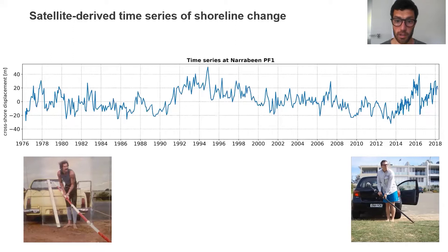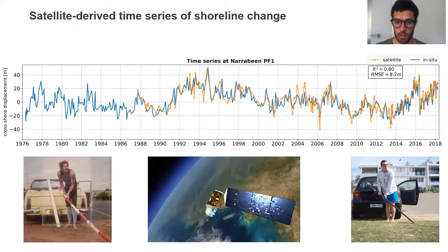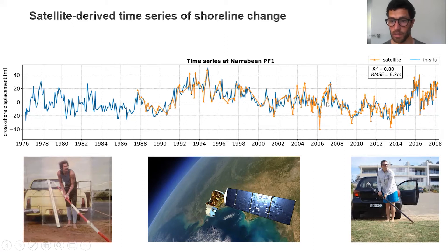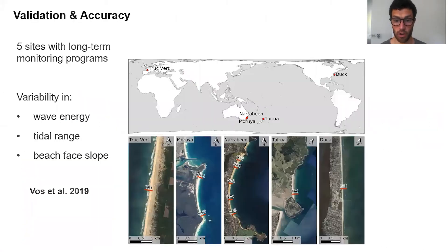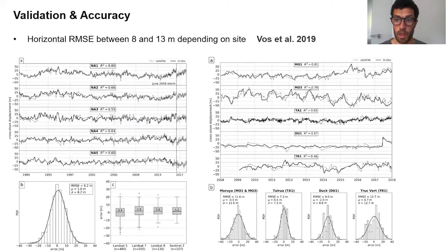We can check how it compares against our ground truth. Here are the last 34 years of shoreline change at Narrabeen from satellite data. It does a very good job at capturing interannual signals as well as strong storm events, like the 2016 storm. The root mean squared error was 8.2 meters — though keep in mind the algorithm was developed at this site, so it's where it performs best. We did validation at other sites with long-term in-situ monitoring programs, and RMSE was between 8 and 13 meters depending on the site.